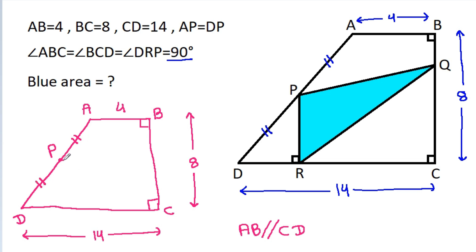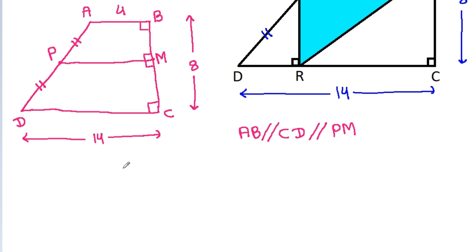So, if we draw a perpendicular from P on BC, suppose this point is M, then PM will be parallel to AB and CD. If we draw a perpendicular from A on PM and a perpendicular from P on CD, suppose this point is S and this point is T, then AS will be parallel to PT.